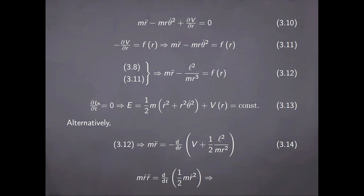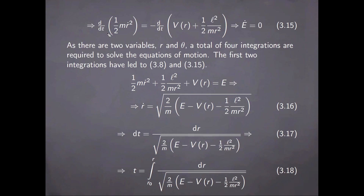Furthermore, notice that because the Lagrangian does not depend explicitly on time, as we have discussed in the previous chapter, it follows that the total energy is conserved. This can also be proved directly from the equation of motion for the radial coordinate itself: from equation 3.12 it follows immediately, and a trick that can be used is that the expression here can be written as the following derivative, from which it follows immediately that the total energy is constant in time.